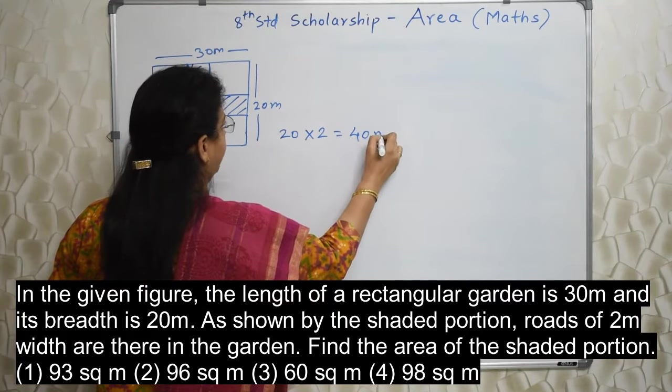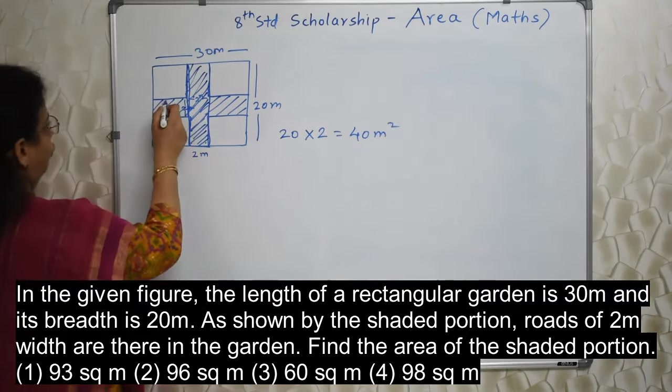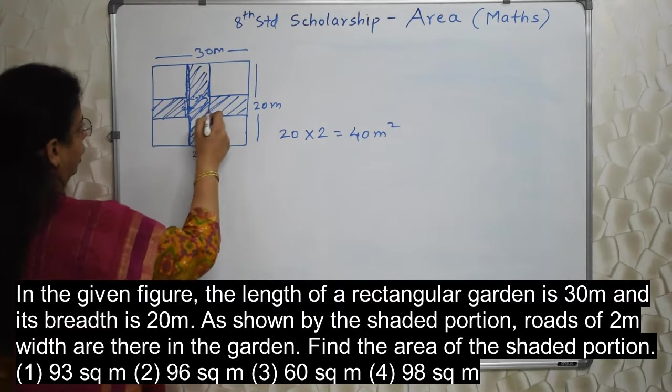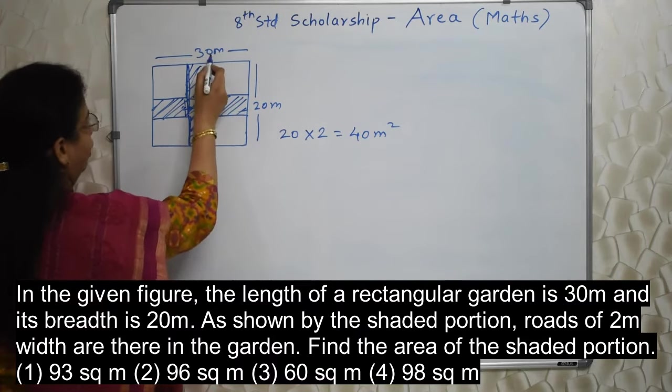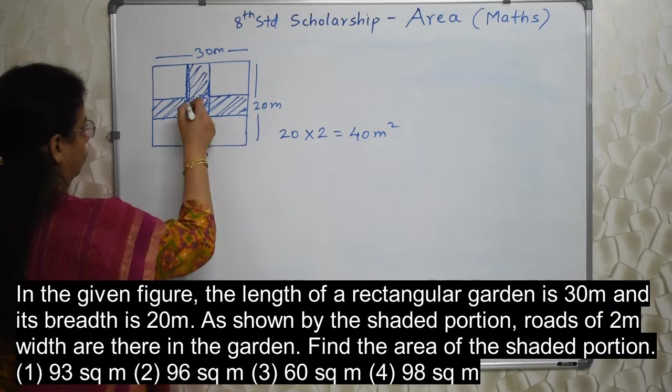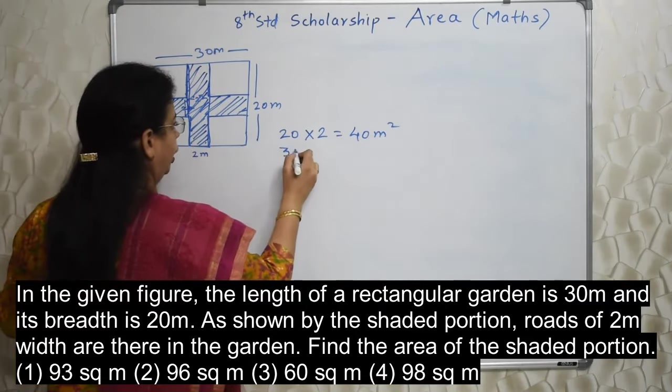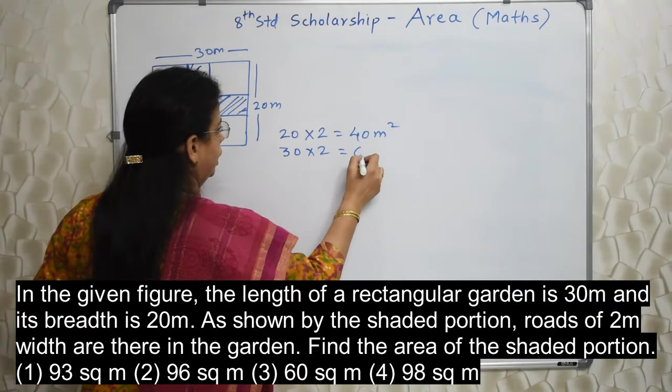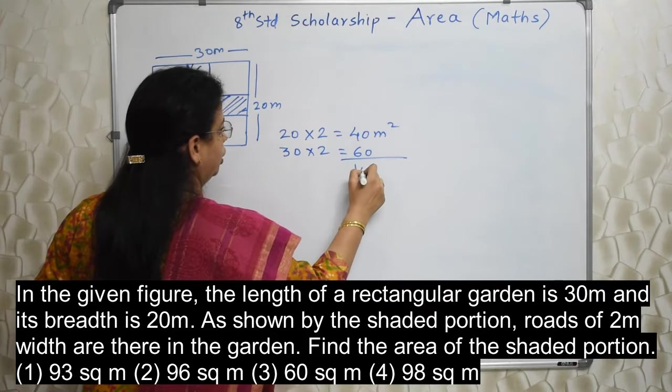Area of this which is in the standing position is 20 into 2, length into breadth, 40 meter square. Now let's do it for this horizontal thing. This is 30 which they have given, again this is 2. So 30 into 2, 60.